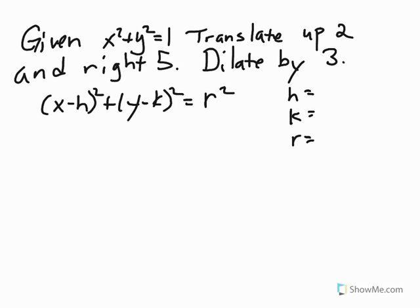Since we're asked to translate up 2, that means that k will be a positive 2. We're asked to translate right 5, so h will be a positive 5. And we're asked to dilate it by 3, so the radius is going to be 3.